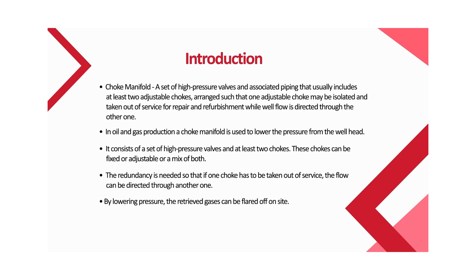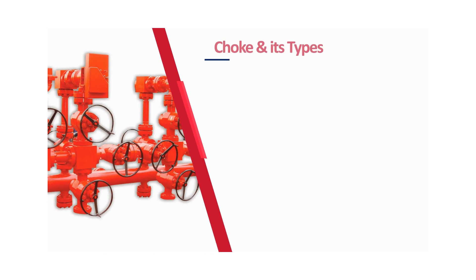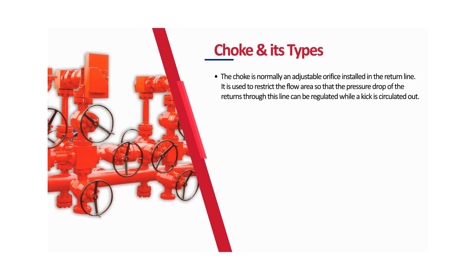In oil and gas production, a choke manifold is used to lower the pressure from the wellhead. It consists of a set of high pressure valves and at least two chokes, which can be fixed or adjustable or a mix of both. By lowering pressure, the retrieved gases can be flared off on site.